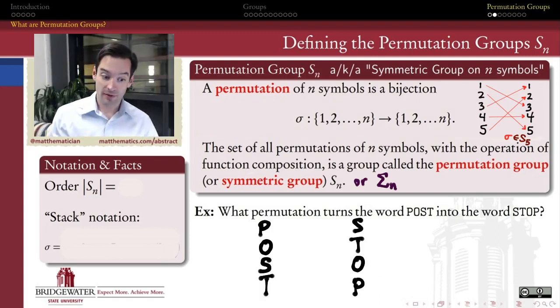As an example of an anagram, how can I express the permutation that turns the word POST into the word STOP? I know that one is a permutation of the other because there's a one-to-one correspondence between the elements of these sets. This P corresponds to that P via this permutation, this O to that O, this S to that S, this T to that T.